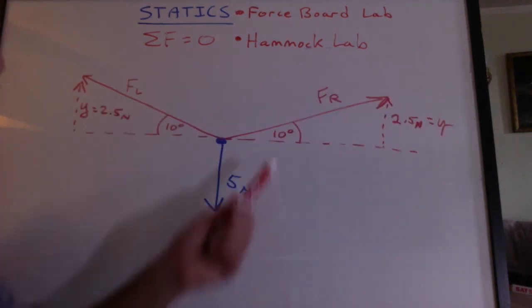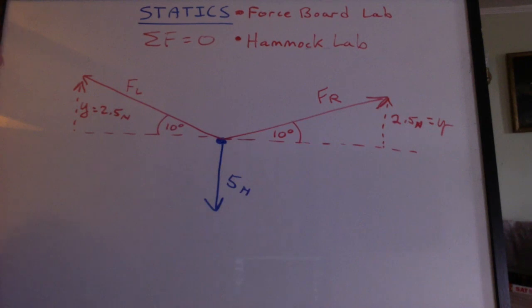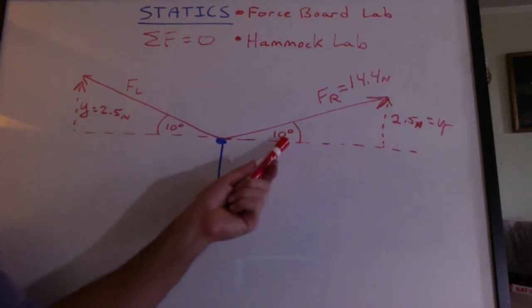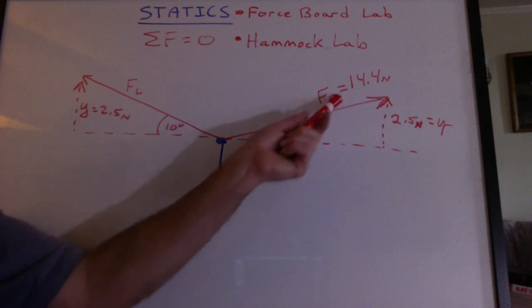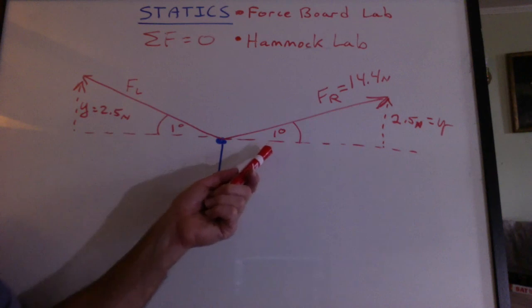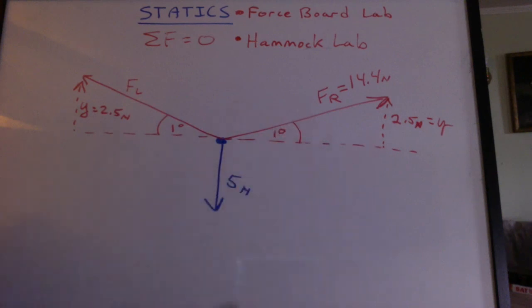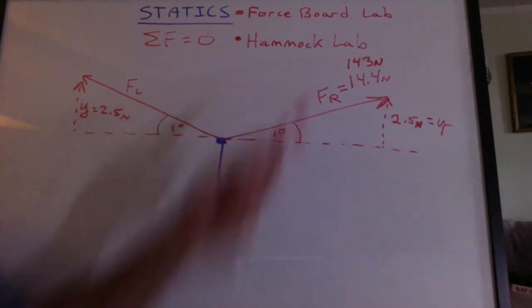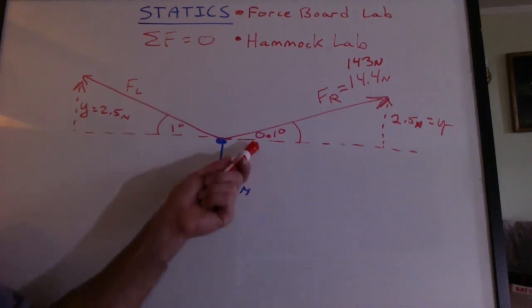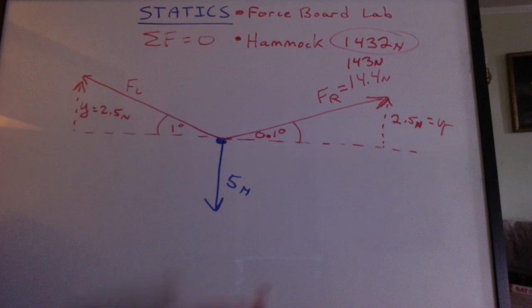So let's see what happens if the angle really does get small. Let's say 10 degrees. The Y component is still 2.5 newtons. What is the force of that right rope? 2.5 divided by the sine of 10 degrees and we get 14.4 newtons. What would happen if the angle went down to one degree? Well, now I get 143 newtons. You knew this was coming. 0.1 degree. Holy smokes, 1432 newtons.